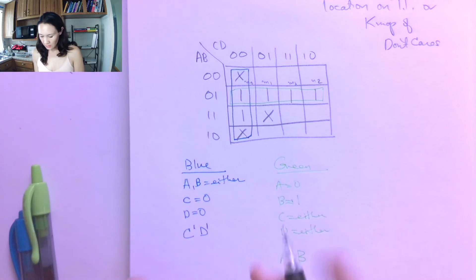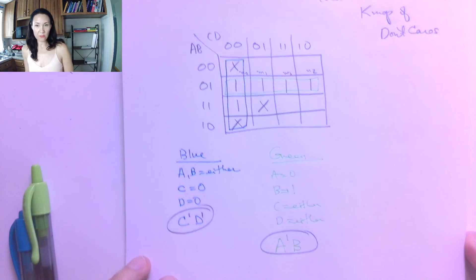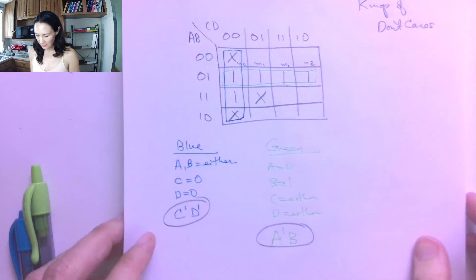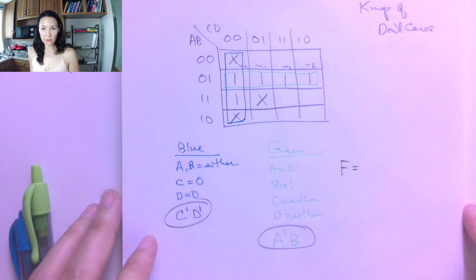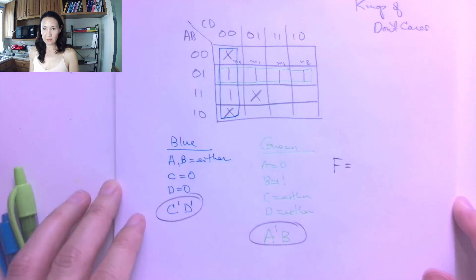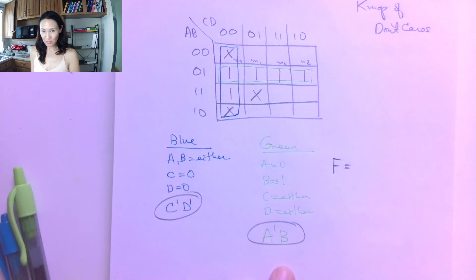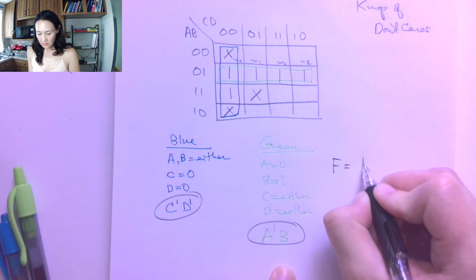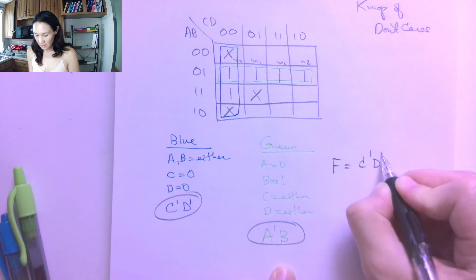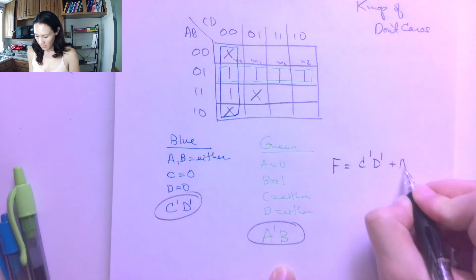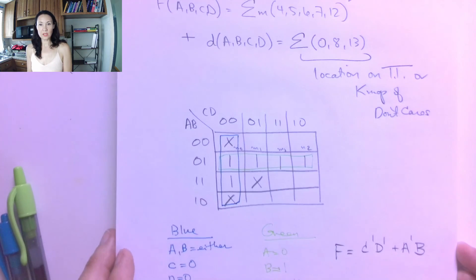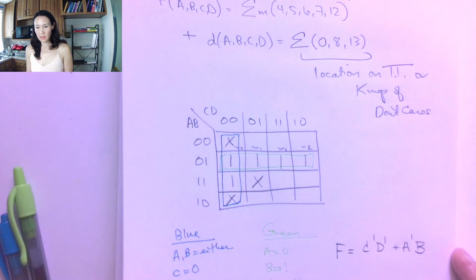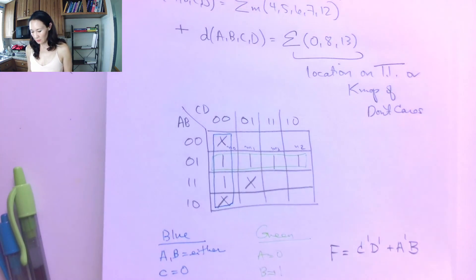So now what I do is I take my product terms that I just figured out from the K-map, and I just add them together. So my reduced F that I get to reduce from the K-map instead of using long, tedious Boolean algebra is just C'D' or A'B. And I got to use the don't cares to do this simplification. So that helped me quite a bit.